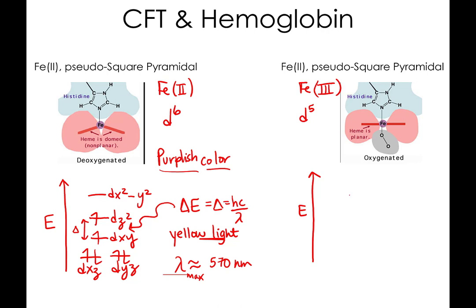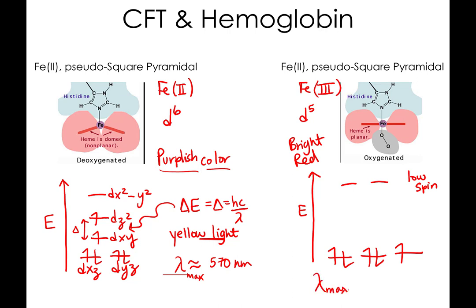For iron 3+ in an octahedral geometry, I would guess a low-spin electron configuration. We know that oxygenated hemoglobin is bright red, which means it's most likely absorbing in the green region, with a lambda max around 490 nanometers. We're absorbing a shorter wavelength because delta octahedral is larger than the energy separation for deoxygenated hemoglobin.